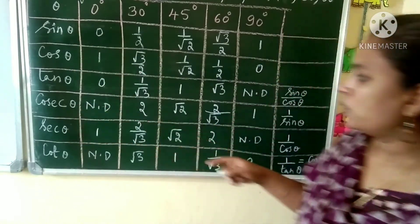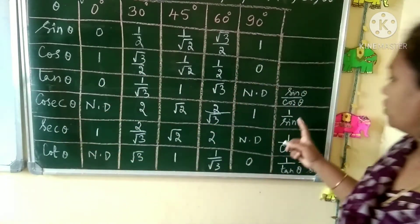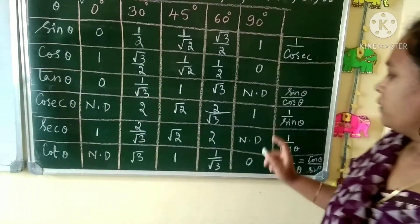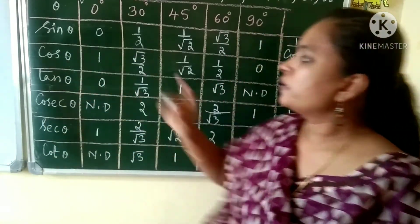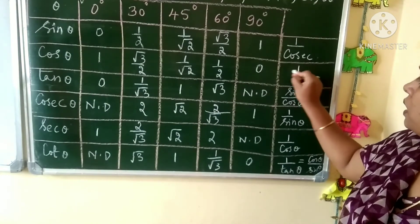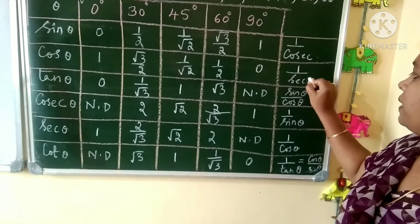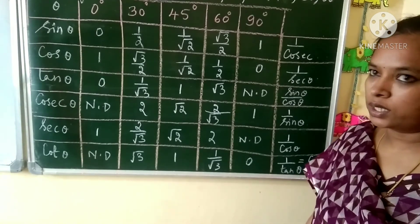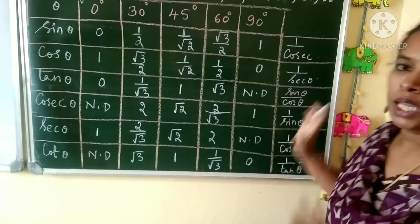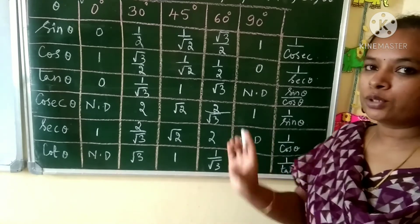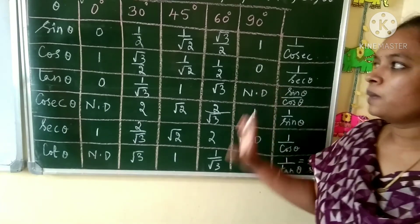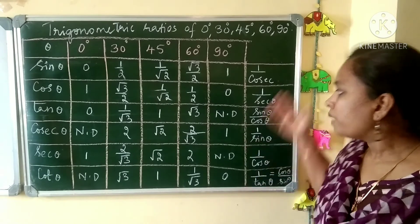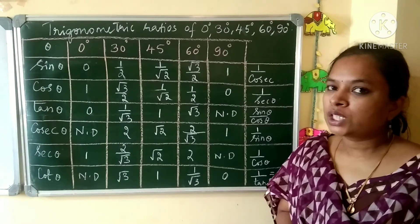You can also write sin = 1/cosec and cos = 1/sec. These values will be very helpful when you are solving questions related to trigonometric ratios. In application-type questions, if this table is ready, half the work is done — you only have to substitute the values. I hope this table is really useful for you to solve the problems. Make use of this table and the ratios, and share it with your friends.